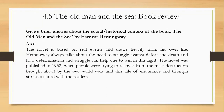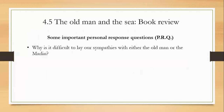Now it's time to go on to one of the hand-picked personal response questions to help resolve problems related to Old Man and the Sea: 'Why is it difficult to lay our sympathies with either the old man or the marlin?' I hope that when it comes to revision of the chapters and prose, you have understood each and everything, and these additional personal response questions and quotes are going to be helpful to add weightage to your marks. We end here with Part 2 and will meet again in Part 3, which deals with the poetry. Thank you and see you in Part 3.